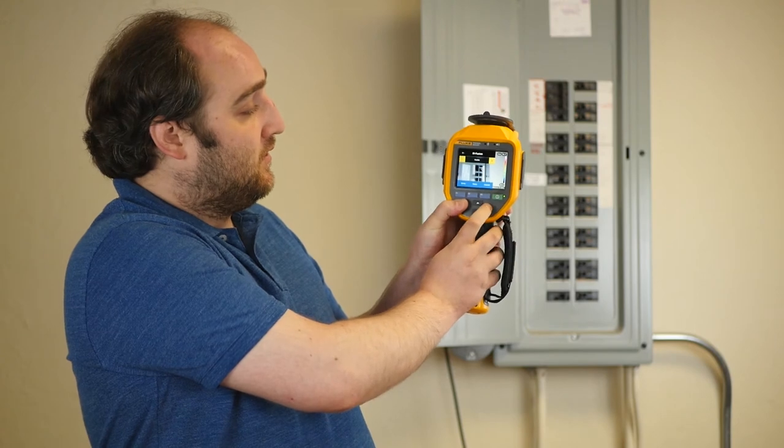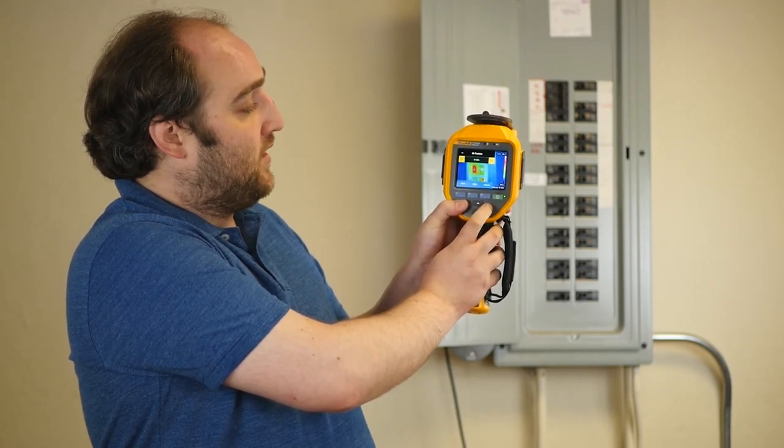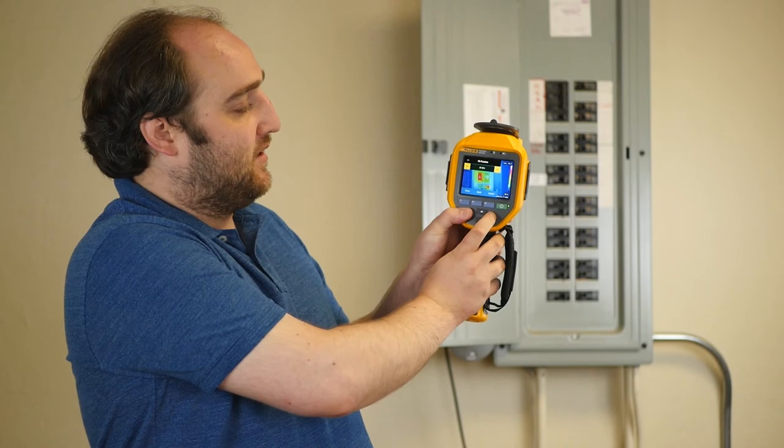You can also switch over to just a visible image, but really most of the time you're going to want to be looking at 50 to 75% IR Fusion. So that'll give you 75% thermal, 25% optical, and so on.